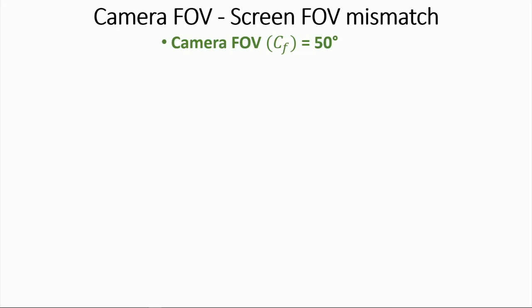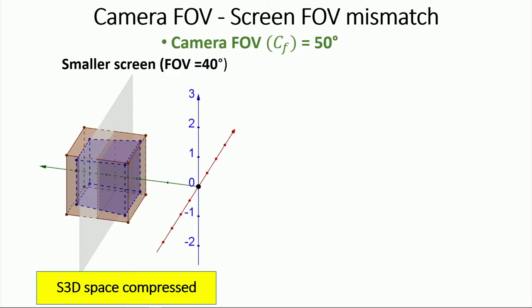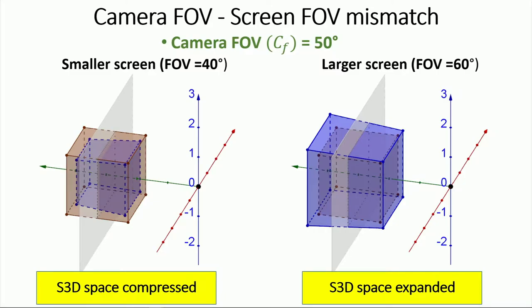If the scene is captured by a 50-degree field of view camera, and then displayed on a smaller field of view screen, the reproduced purple cube becomes smaller than the original brown cube. If the contents are displayed on a larger screen, the reproduced cube becomes larger than it should be, and the space will be expanded. As mentioned before, these are shown in isometric projection, so the reproduced cubes are not cubes anymore.